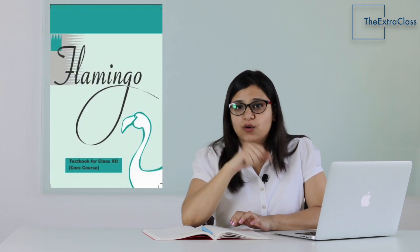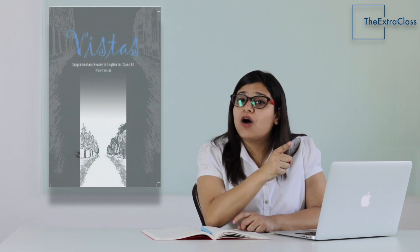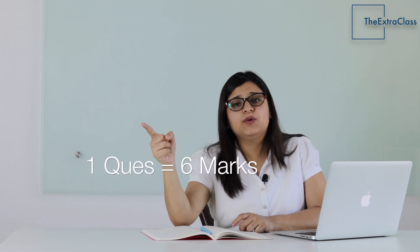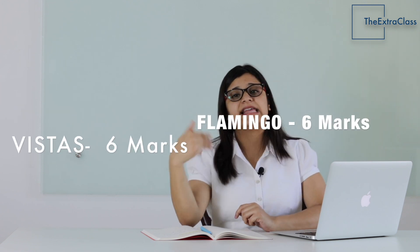Next aate hain aapni books pe — that is Vistas and Flamingo. Ab Vistas and Flamingo mein bhi, aapke paas teen choices hain question ki, jis mein se aapko sirf ek karna hoga. Six marks ka question aapko ek karna hoga from Vistas and six marks ka ek question aapko karna hoga from Flamingo. And the best part is, dono mein teen questions diye honge. Agar aap right question choose karte ho jis ki aapko in-depth knowledge hai, your marks are going nowhere. Ye alag-alag karke aayenge — three from Vistas and three from Flamingo, six and six, again twelve.